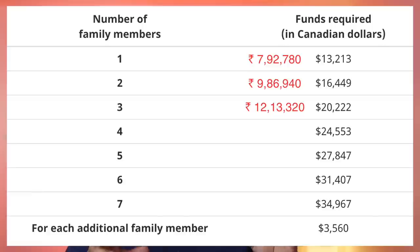This is definitely a problem for people in India who want to immigrate to Canada as permanent residents, because they'll be spending more money throughout the process. When I immigrated in 2017 as a single person, the proof of funds required was lower and the exchange rate was less than 50 rupees per Canadian dollar — so I only had to prove around 6 lakh rupees. But now, with the increased exchange rate and higher proof of funds, you need to prove around 8 lakh rupees — an increase of 2 lakh rupees. For a family of two it's around 10 lakh, and for a family of three it's more than 12 lakh rupees.